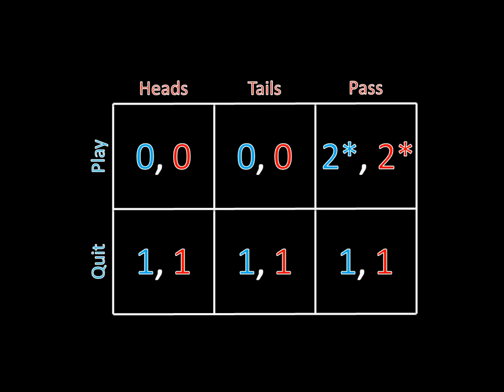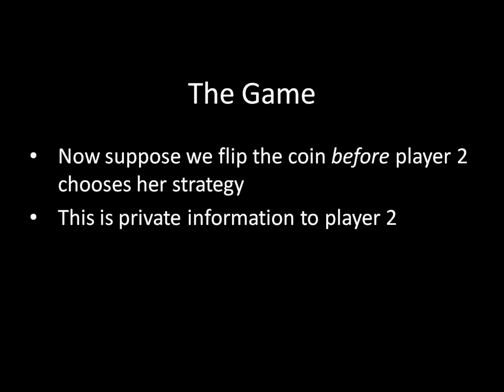The next situation is going to bestow one of these players more information. We're going to give player 2 knowledge of the coin flip. So rather than player 2 not knowing what the coin flip is going to be when she chooses heads or tails, she'll see the result of the coin flip privately. Player 1 doesn't know this information — it's private to player 2. The payoffs work exactly the same as before; it's just that player 2 is essentially cheating, and she knows what the answer is to that coin flip.